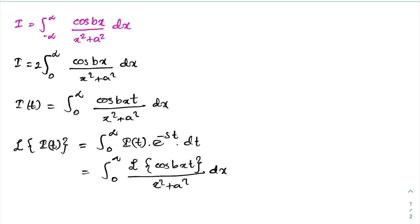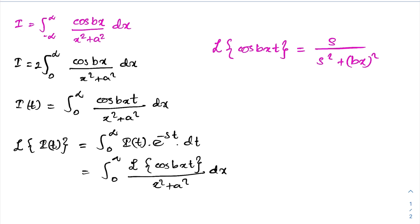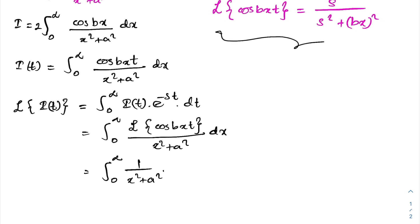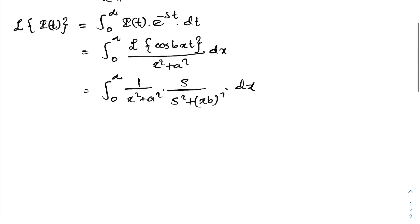We know the Laplace transform of cosine(bxt) is equal to s over (s² + b²x²). Then now we can write the integral from 0 to infinity of 1 over (x² + a²) times s over (s² + b²x²) dx. Here we have b²x², so I am going to take s over b² as a common factor, and we know it is a constant.